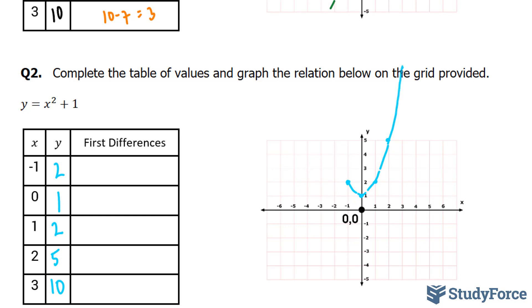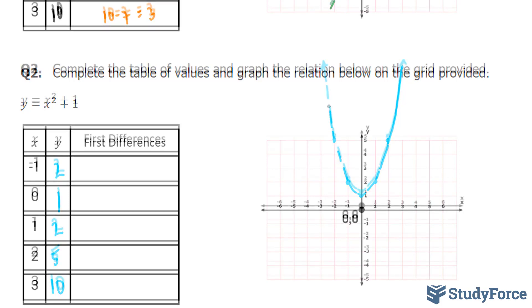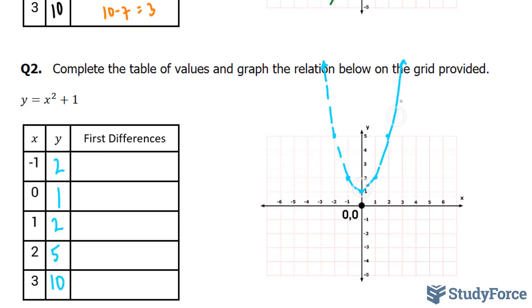So we end up with this curvy graph. And what this is called is a parabola. I mean, if we had chosen other x values less than negative 1, we would end up with something that looks like this. A symmetrical curve where any point along this curve is at a fixed distance from a point in the middle known as the focus.